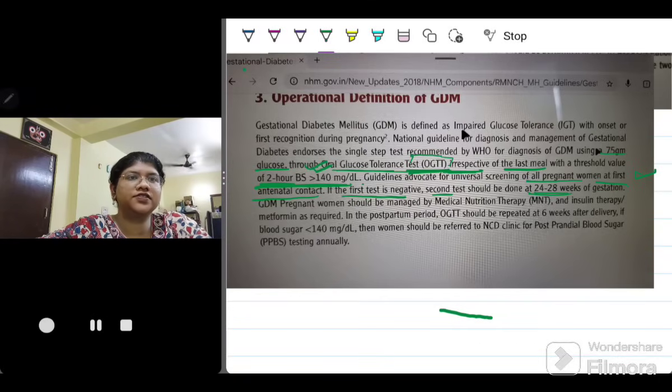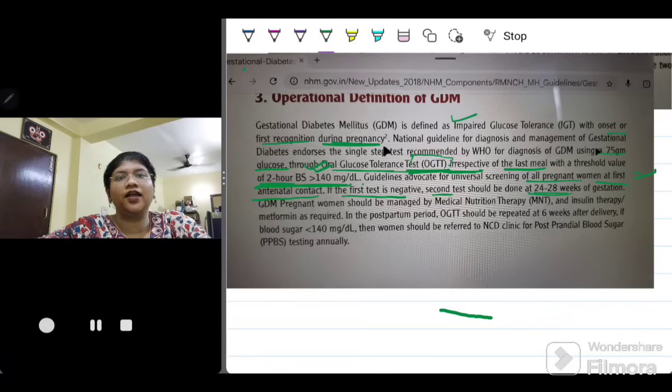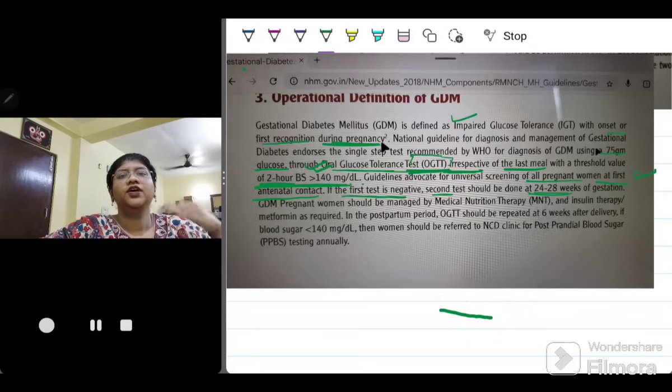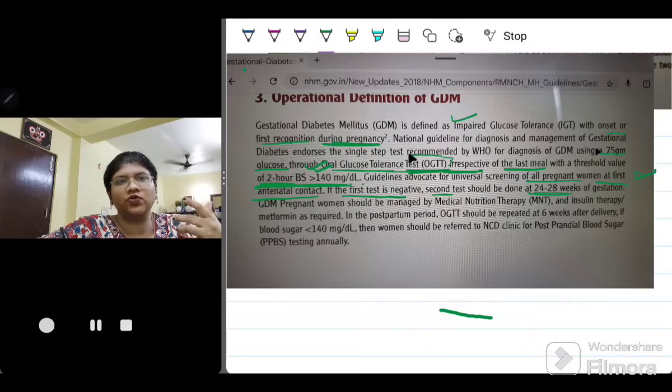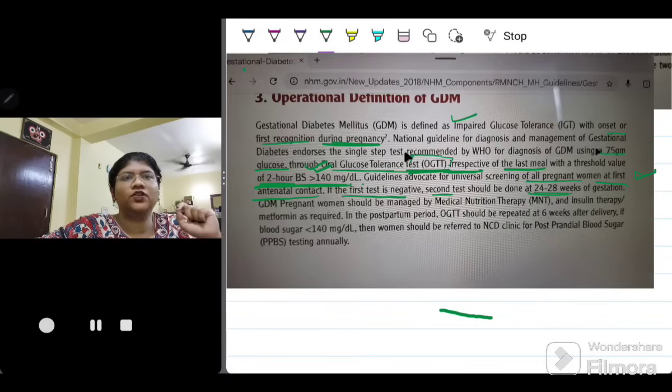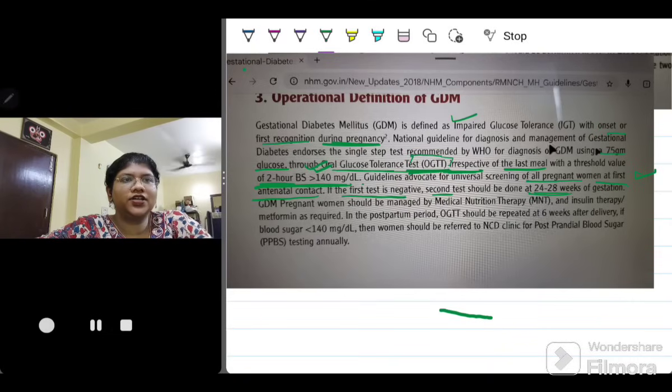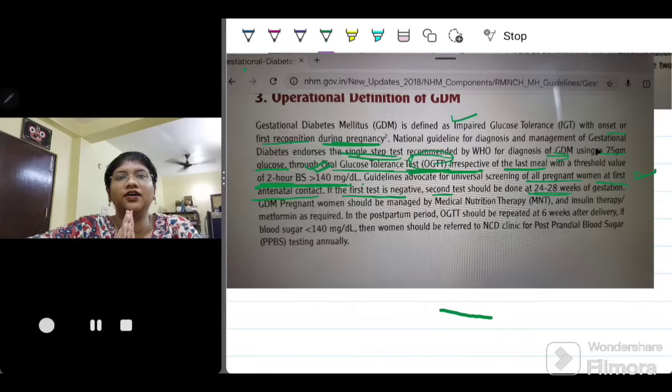Let's quickly brush up regarding the definition. Gestational diabetes mellitus or GDM is defined as impaired glucose tolerance with onset or first recognition during pregnancy. Unlike the hypertensive disorders of pregnancy, GDM is irrespective of the gestational age with onset or first recognition during pregnancy. The National Guideline for Diagnosis and Management of GDM endorses single step test using 75 gram glucose OGTT, that is oral glucose tolerance test. Remember the DIPSI guidelines tell about OGTT. It is not GCT.